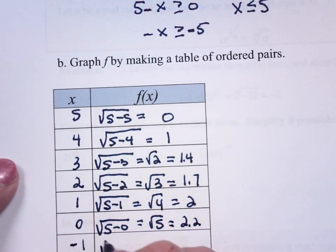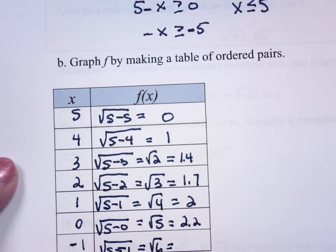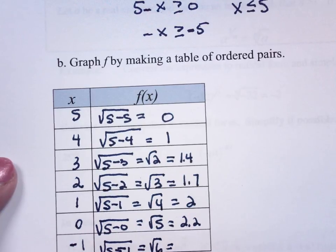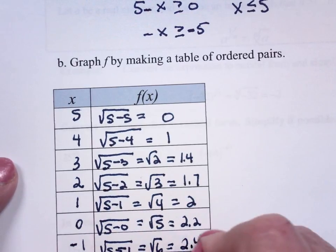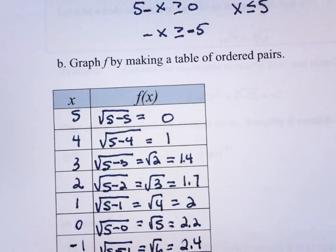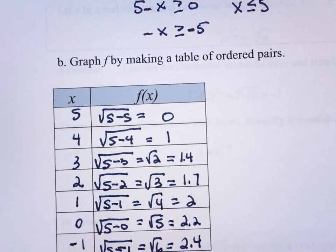And the square root of 5 minus a minus 1 is the square root of 6. And the square root of 6 is 2.4. That should be enough to give me a shape of this thing.